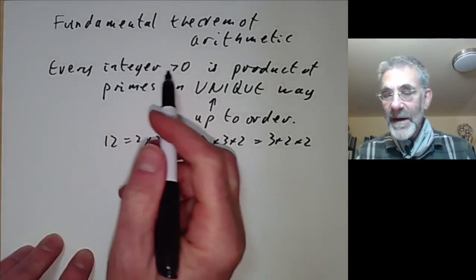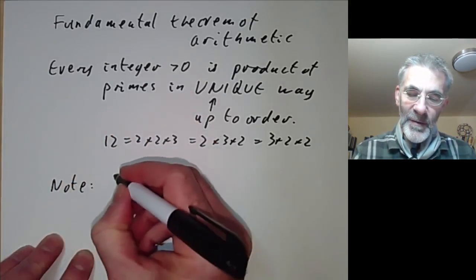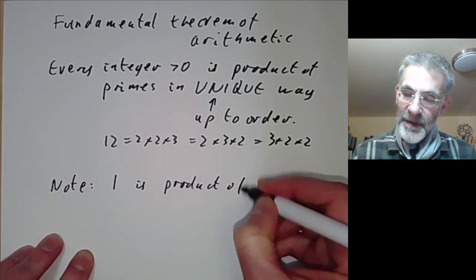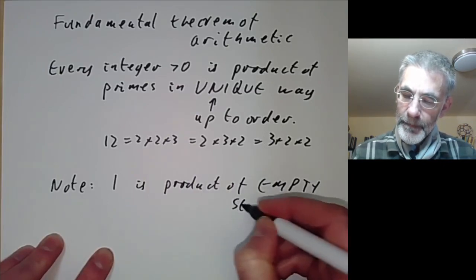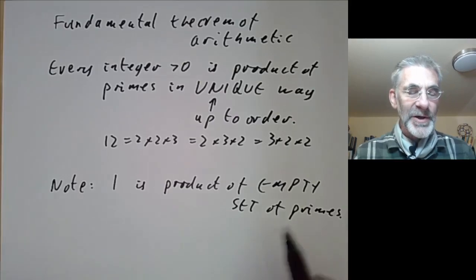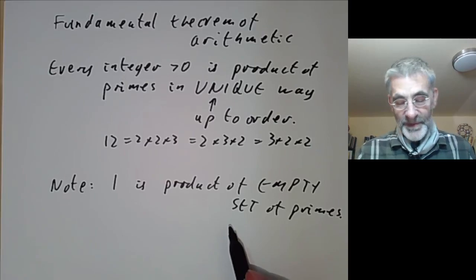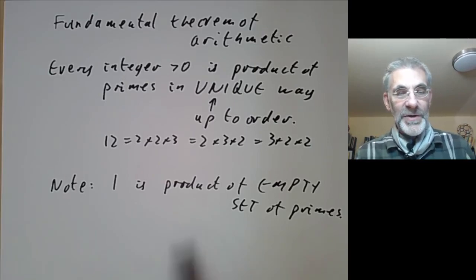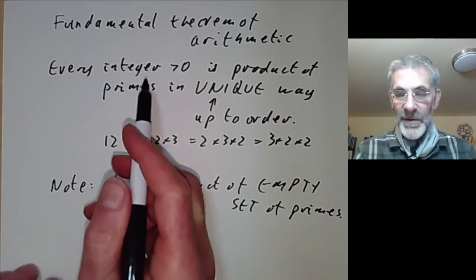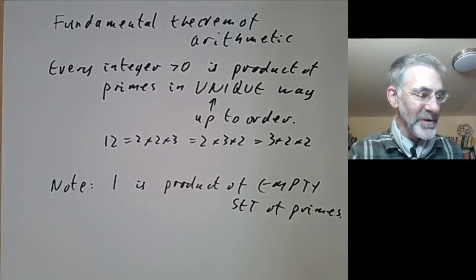I said every integer greater than zero, and you might think that one is a counterexample, but we note that one is a product of an empty set of primes. The convention is that multiplying together an empty set of numbers gives one, in the same way that adding an empty set of numbers gives zero. So this applies even to the integer one if you set your conventions up correctly.